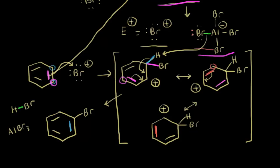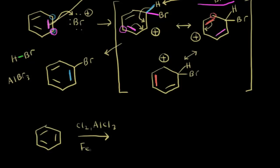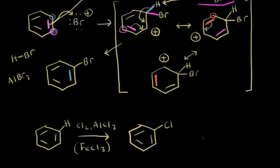If you want to add other halogens to benzene, consider chlorination: starting with benzene, add Cl₂ with a catalyst of AlCl₃ or FeCl₃. The result is substitution of a chlorine for one of the aromatic protons on the ring, giving chlorobenzene as the product, with HCl as another byproduct. These are two examples of the halogenation of benzene via electrophilic aromatic substitution.